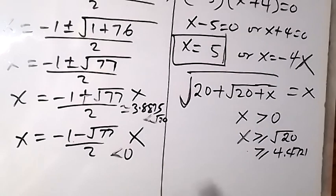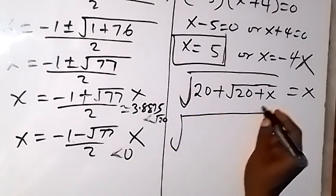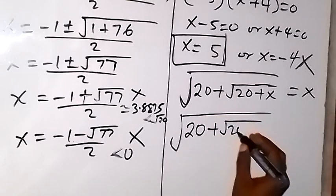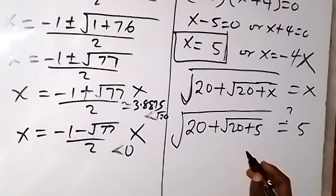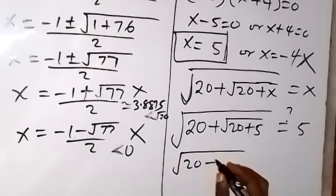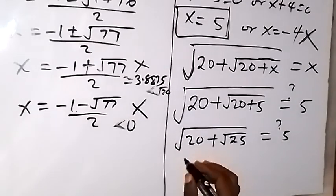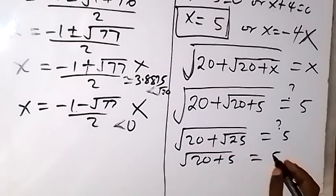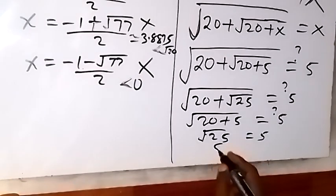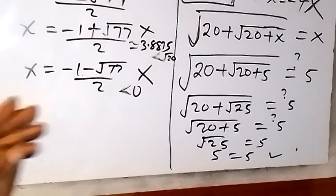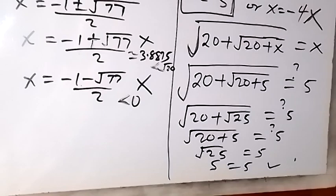Let's verify: substituting x equals 5 into root(20 plus root(20 plus 5)) gives root(20 plus root 25), which is root(20 plus 5), which is root 25, which equals 5. This confirms x equals 5 is the solution. Thank you for watching — please subscribe to this channel for more videos. See you in the next class!